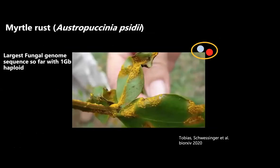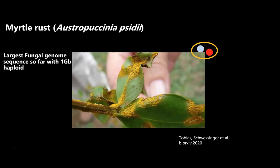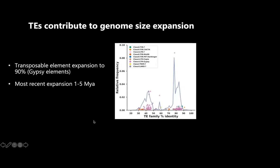Switching now to myrtle rust. If you paid attention, the wheat rust genome is roughly 80 megabases. In comparison, myrtle rust has a really huge genome — roughly one gigabase haploid — the biggest fungal genome sequenced and analyzed to date. It's also around 700 megabases haploid by another estimate. This was quite an exciting project, a nice collaboration with the University of Sydney, Plant & Food Research, and others in Australia.